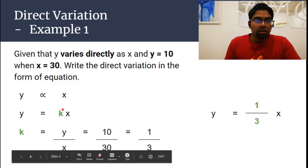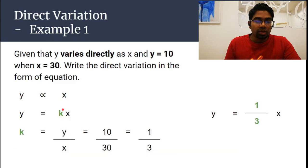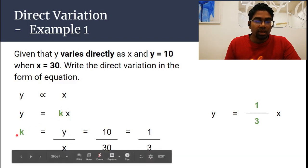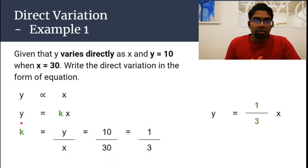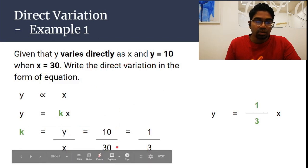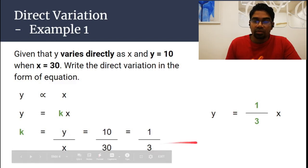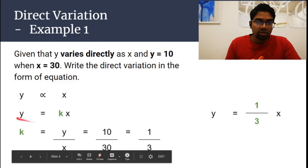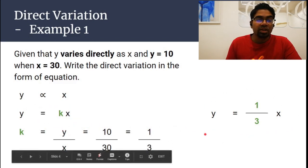To find the value of k, rearrange the equation: k equals y over x. Using the given values, y is 10 and x is 30, so k equals 10 over 30, which gives 1 over 3. Now substitute k back into the equation — the final answer is y equals (1/3)x.